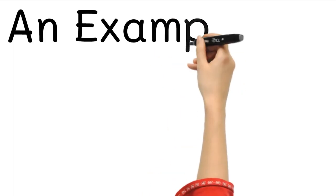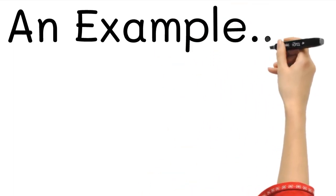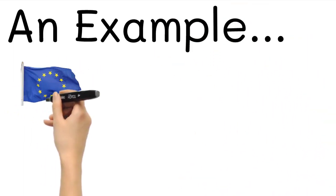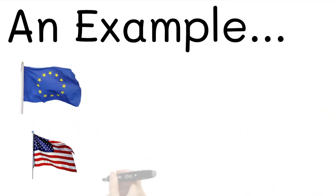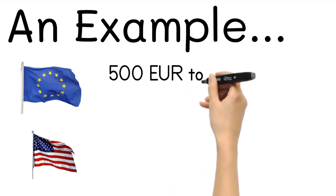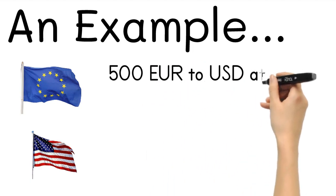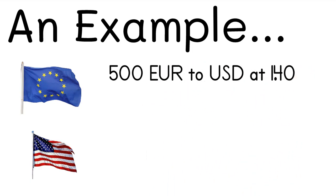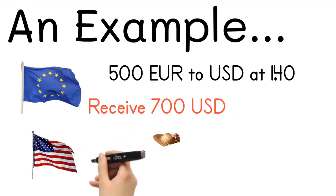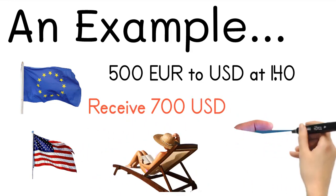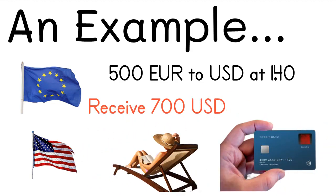Moving on, let's use an everyday example to explain how you can actually profit from this. Suppose you live in Europe and went to the United States for a holiday. You convert your 500 euros into US dollars at the current rate of 1 dollar and 40 cents for every euro, which means you will receive 700 US dollars.